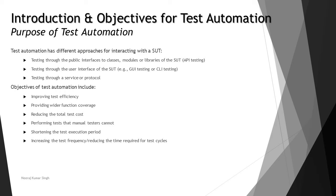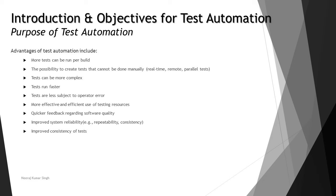The objectives of test automation include: improving test efficiency by allowing you to run more tests more often; providing wider functional coverage since tools can do things that are complicated manually; reducing the total test cost since automation is faster than human execution; performing tests that manual testers cannot perform; shortening the test execution period; and increasing test frequency or reducing the time required for the overall test cycle.